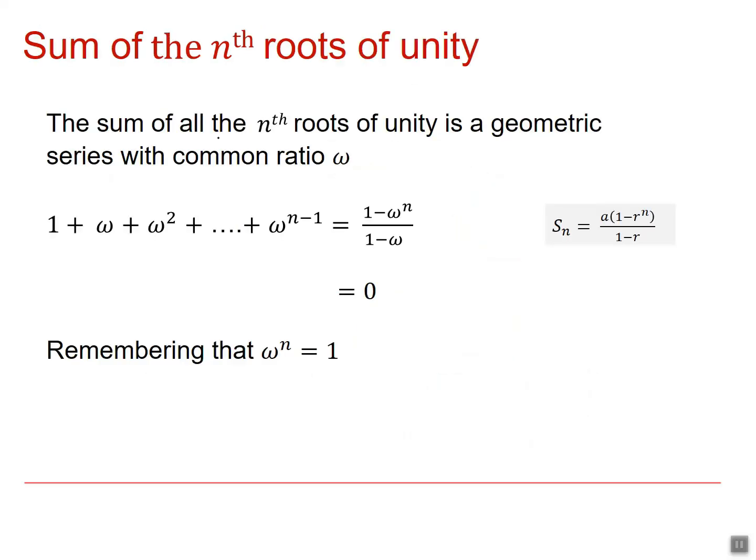So what about the sum of all the nth roots of unity? Well, it's a geometric series. We've got 1 plus omega plus omega squared. So we've got a first term of 1 and a common ratio of omega. Well, the sum for that is going to be 1 times 1 minus omega to the n, divided by 1 minus omega.